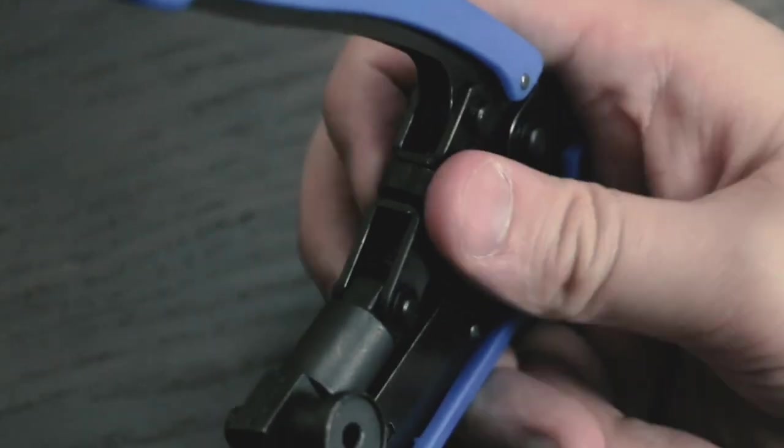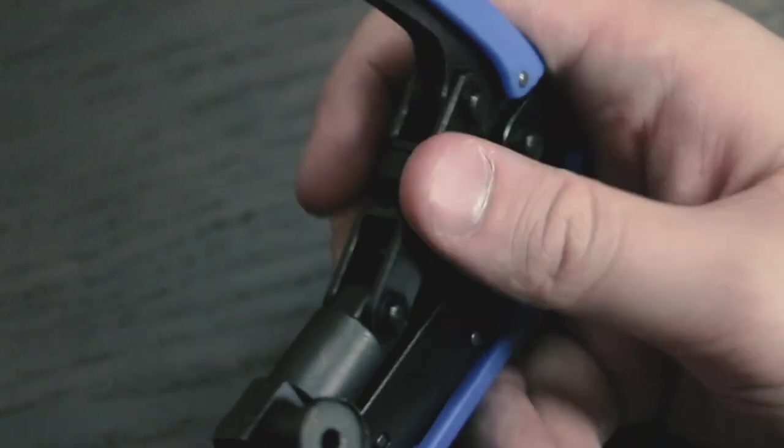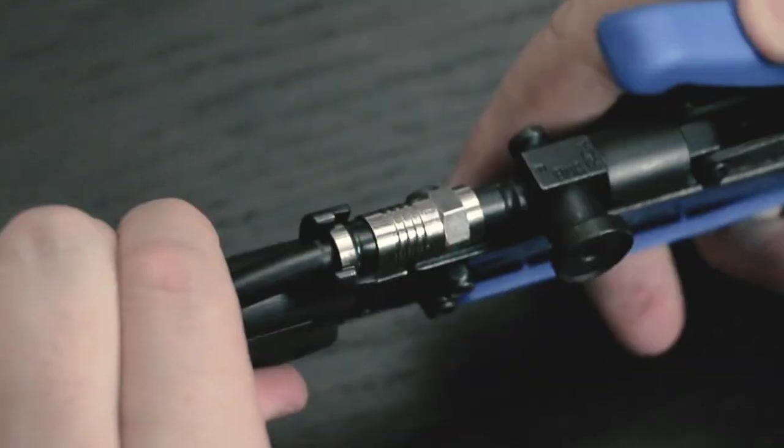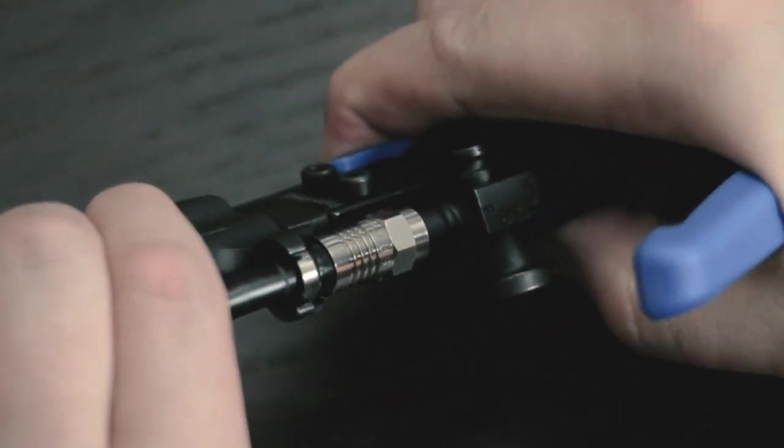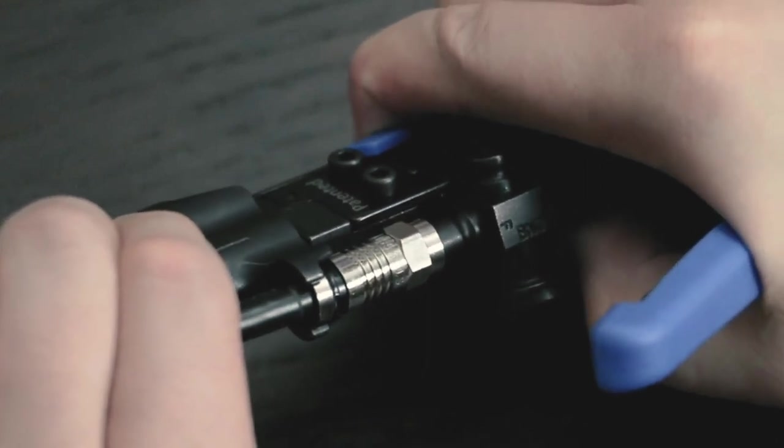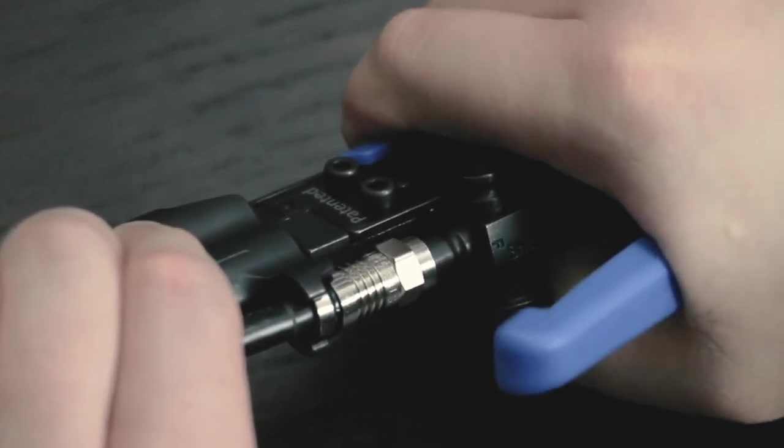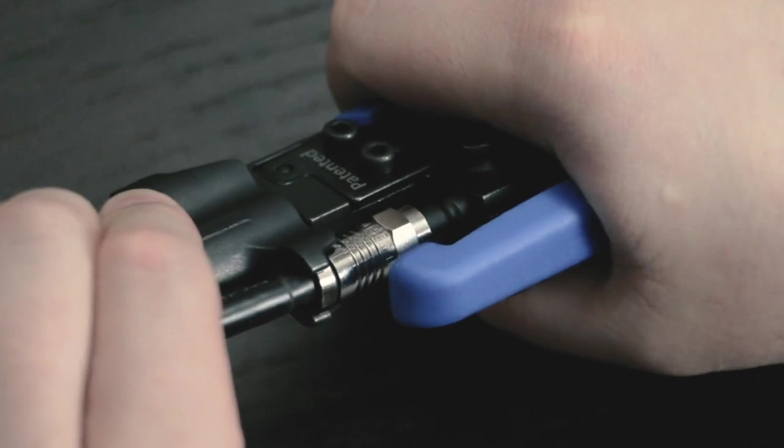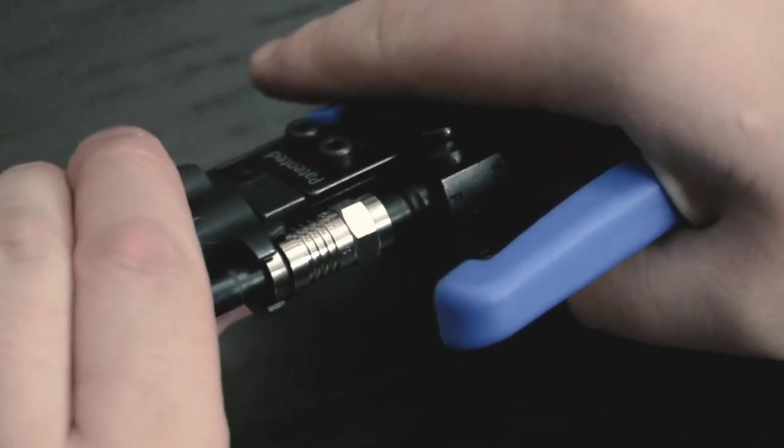Once your cable and connector are inserted, twist the rotating dial to the correct compression level before squeezing the tool closed, and then reopening it to free your finished cable.